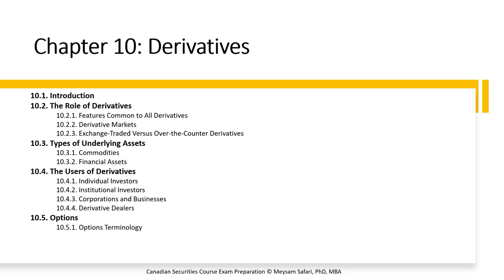Option terminology: the strike price (or exercise price) is the price at which the underlying asset can be purchased or sold in the future, agreed upon when entering the option contract. The option premium is the fee paid by the option buyer to the seller to obtain the right to buy or sell the underlying asset. Once the premium has been paid, the option buyer has no further obligation to the writer unless they decide to exercise. Therefore, the most an option buyer can lose is the premium paid, while writers must always stand ready to fulfill their obligation.